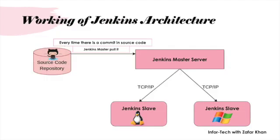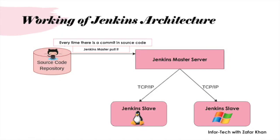We have already discussed the Jenkins architecture in the last video. Developers commit changes to the source code repository. The CI server of Jenkins checks the repository and pulls newly changed code at regular intervals. The build server builds the pulled code into an executable file; if any error occurs it is sent back to developers. Jenkins deploys the build application on the test server, and if testing is successful, the error-free code is deployed on the production server.